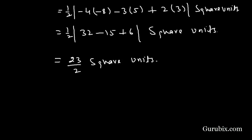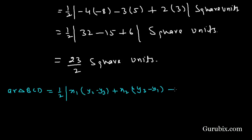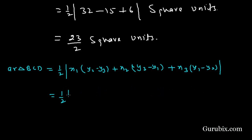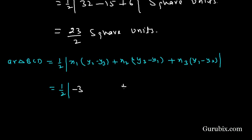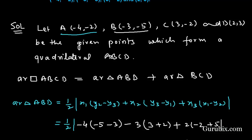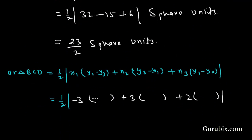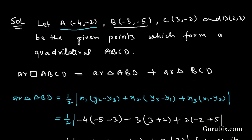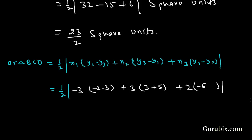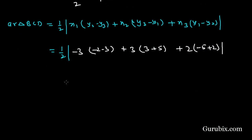Now we find the area of triangle BCD using the same formula: (1/2) |x1(y2 - y3) + x2(y3 - y1) + x3(y1 - y2)|. Here x1 = -3, x2 = 3, and x3 = 2. For the y-values: y1 = -5, y2 = -2, y3 = 3. So (y2 - y3) = -5, (y3 - y1) = 8, and (y1 - y2) = -3.